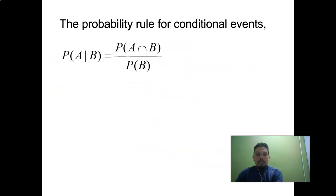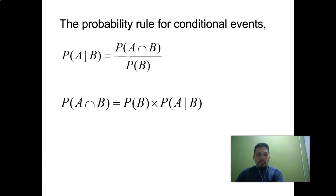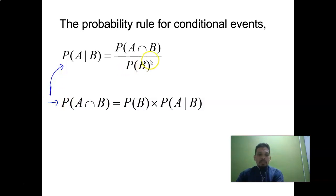The probability rule for conditional events: probability of A intersect B equals probability of A given B times probability of B. This equation is derived by rearranging the conditional probability formula — multiply both sides by probability of B to cross-multiply.